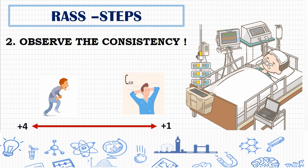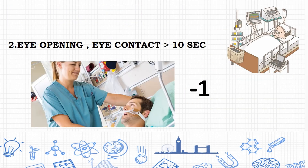If the patient has restlessness or agitation, the score would be plus one to plus four. For plus one, the patient is anxious and restless with simple turning and movement but not aggressive. For plus two, the patient is agitated with non-purposeful movement — they may suddenly try to get up from the bed and fight the ventilator. Plus three is very agitated — they start to pull out catheters and lines. Plus four is combative — they are violent and may be a danger to staff.